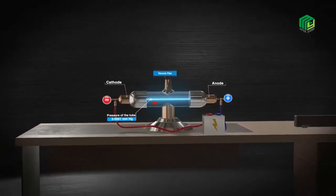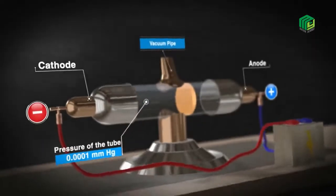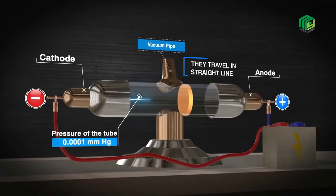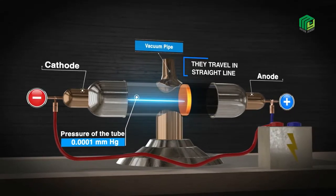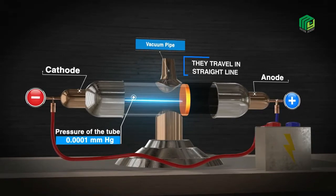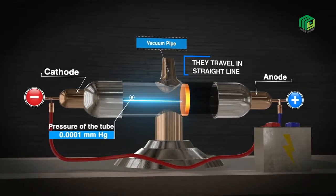Properties of cathode rays are: First, when any object is placed in the path of the cathode rays, these rays cast shadows. This shows that cathode rays travel in straight lines.